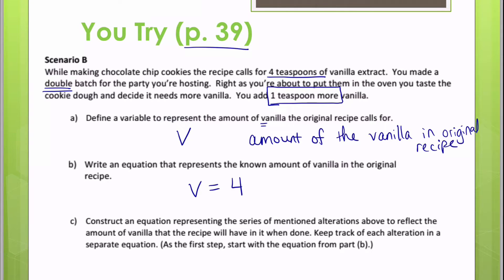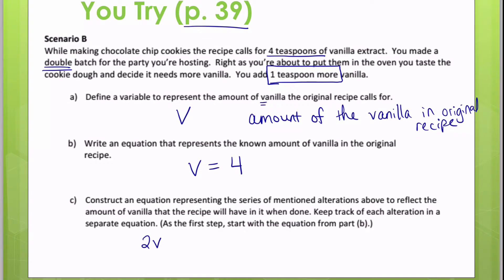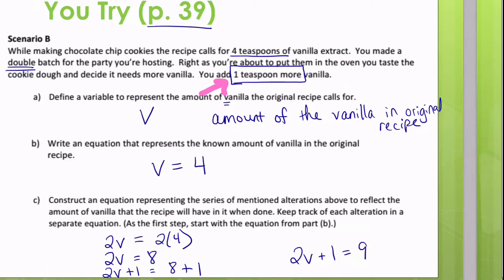And then I'm going to need to do my alterations here. So first of all, I need to double it, two copies of that batch. So 2V equals two times four. So I'm going to get 2V equals eight. And then it says that I need to add that one teaspoon more. So I'm going to say 2V plus one, which now equals eight plus one. I end up with 2V plus one equals nine.